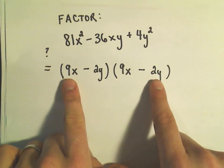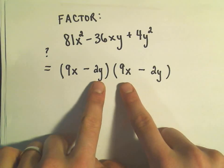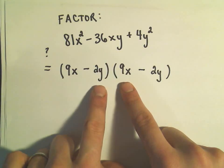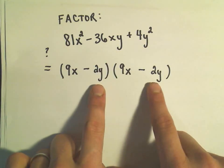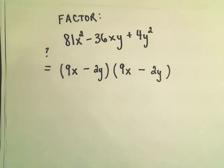9x and negative 2y will give us negative 18xy. On the inside we'll get another negative 18xy. If we combine those, we'll get our negative 36xy. And then on the outside we'll get a positive 4y².